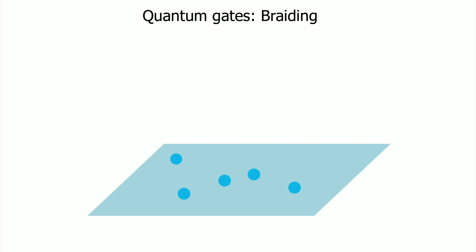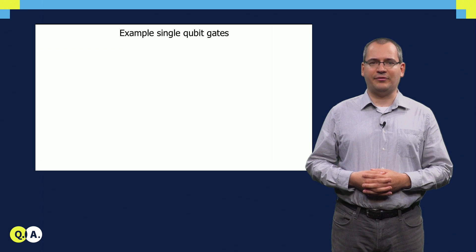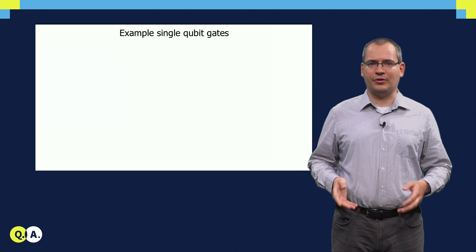Exchanging another pair of anyons leads to a different quantum operation. Let's see a few examples, specifically for the Majorana bound states, which form Ising anyons.